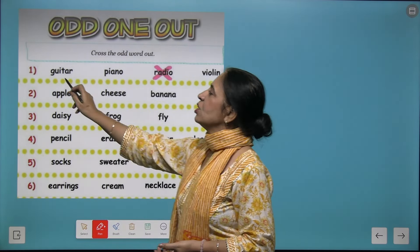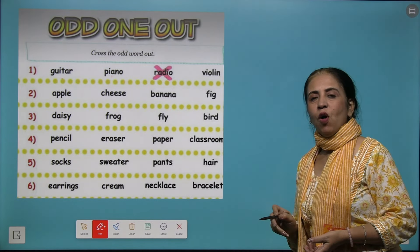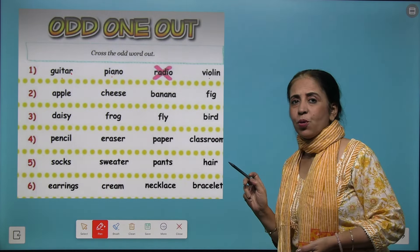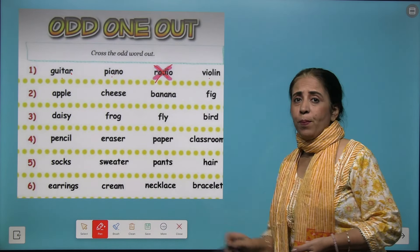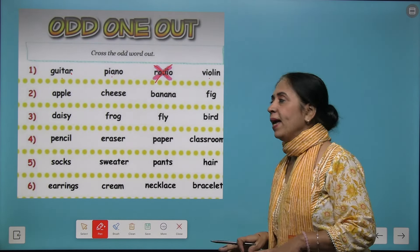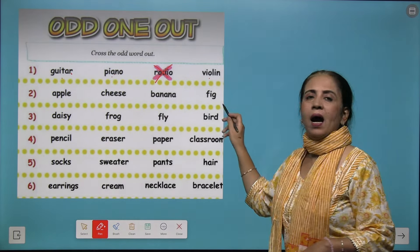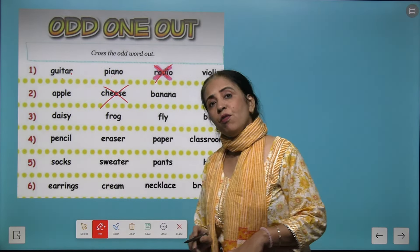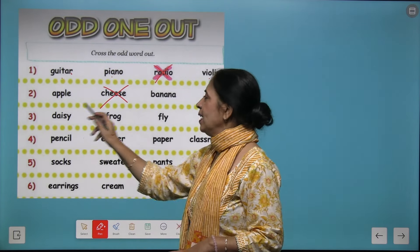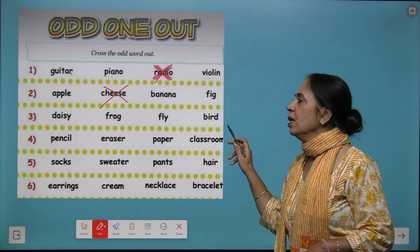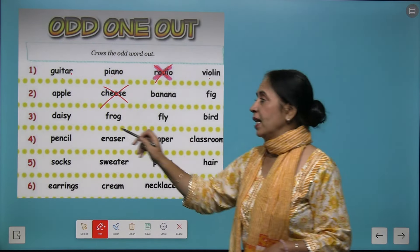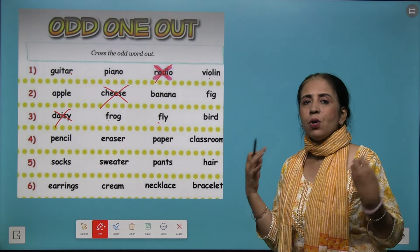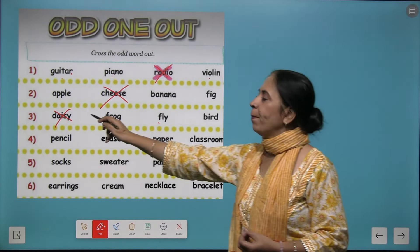Let's try a few more. We have guitar, piano, radio, and violin. Guitar, piano, and violin are all musical instruments — you don't play a radio, so radio is the odd one out. Next: apple, cheese, banana, and fig. Cheese is not a fruit, so cheese is picked out. Next: daisy, frog, fly, and bird. Daisy is a flower and the other three are not flowers, so we pick it out.